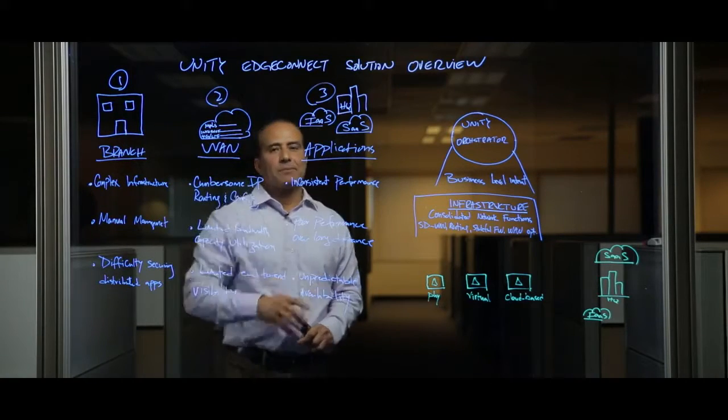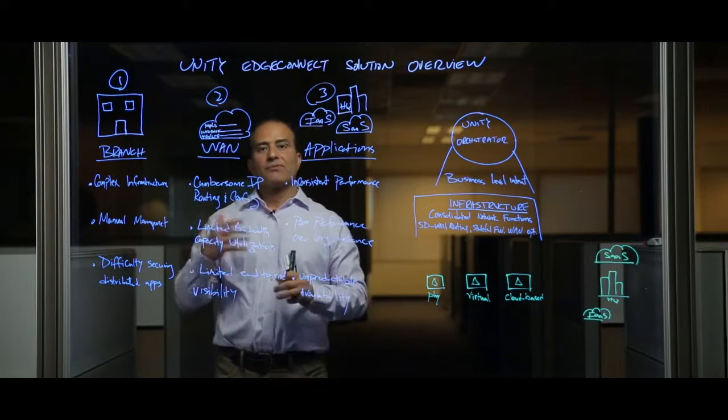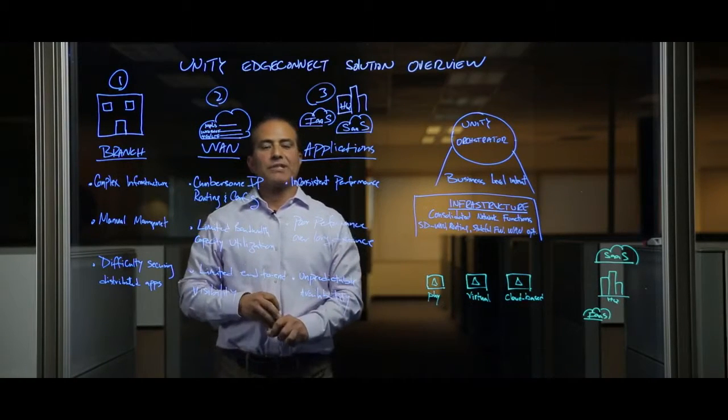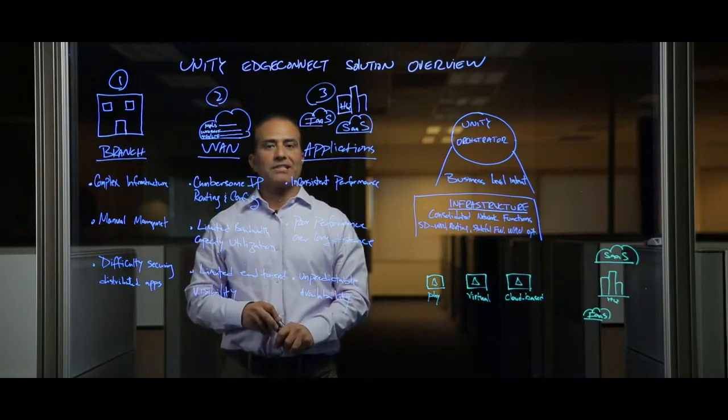And the third bucket is around applications. Applications are now distributed, and they're using different links. They're trying to use different links from broadband, MPLS, 4G, LTE. So now they have inconsistency in terms of the performance and the availability of these applications.